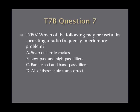Question 7. Which of the following may be useful in correcting a radio frequency interference problem? A. Snap-on ferrite chokes. B. Low-pass and high-pass filters. C. Band-reject and band-pass filters. Or D. All of these choices are correct.